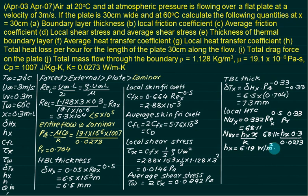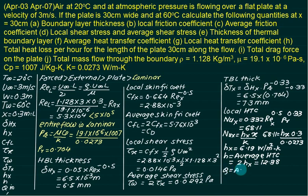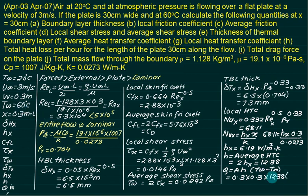For the average heat transfer coefficient in laminar flow, h̄ = 2·h_x = 12.38 W/m²·K. The total heat transfer is Q = A·h̄·(T_w − T∞), where area = 0.3 × 0.3 m², h̄ = 12.38 W/m²·K, T_w = 60°C, and T∞ = 20°C.